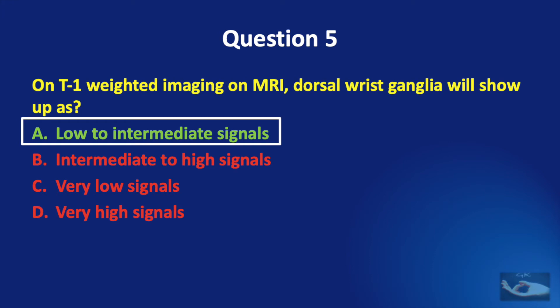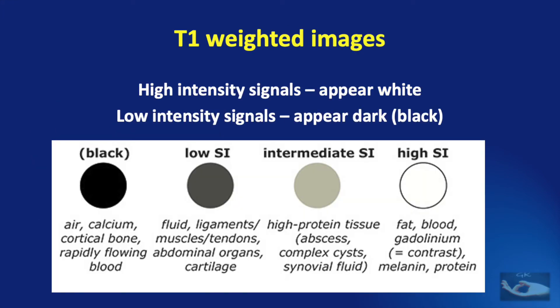The correct answer is low to intermediate signals. To understand this, we need to understand T1 weighted images. On T1 weighted images, high intensity signals appear white and low intensity signals appear dark or black. High intensity on T1 weighted images are usually from fat, blood, gadolinium contrast material, or protein. Low intensity or black signals are seen with air, calcium, cortical bone, or rapidly flowing blood.